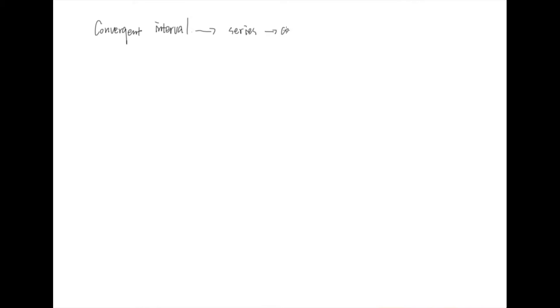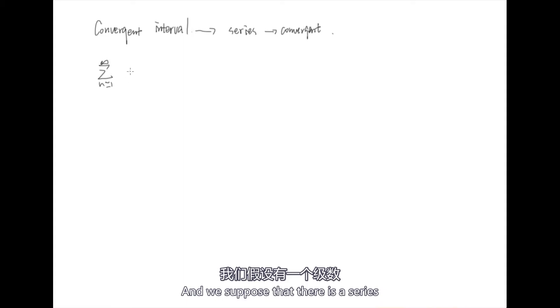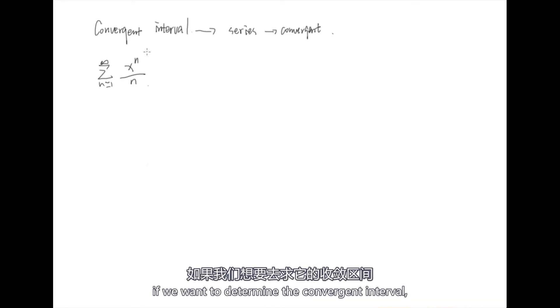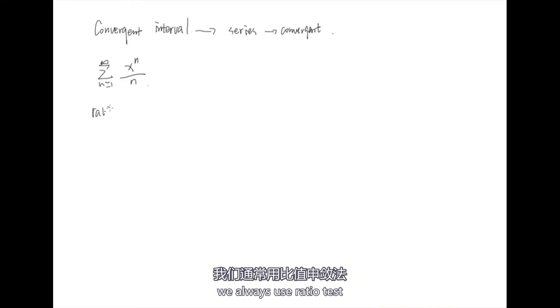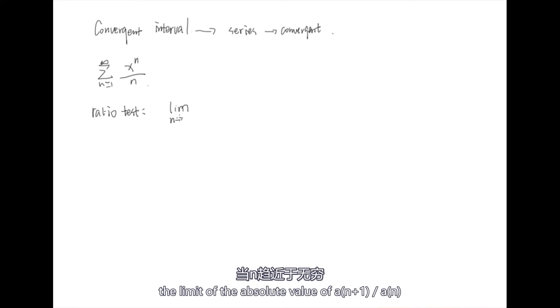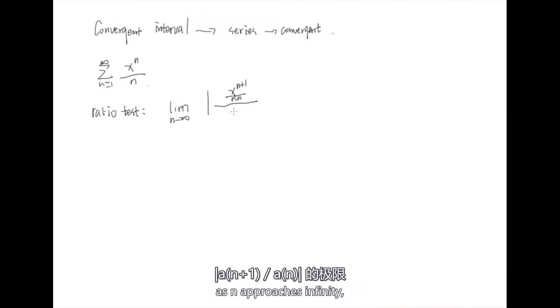Now I want to use an example to talk about convergent interval. The convergent interval is an interval in which the series is convergent. Suppose there is a series. If we want to determine the convergence interval, we always use the ratio test. To use the ratio test, we need to determine the value of the limit of the absolute value of a_{n+1} over a_n as n approaches infinity.